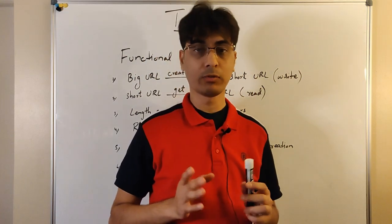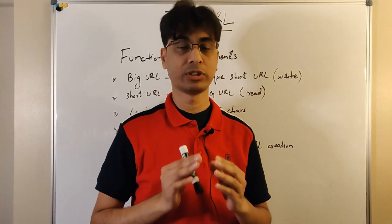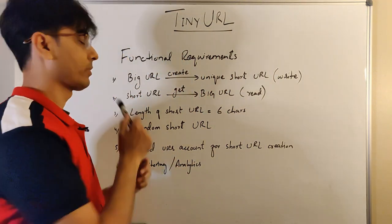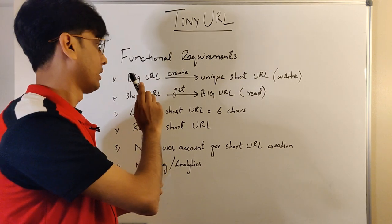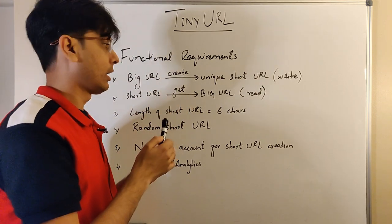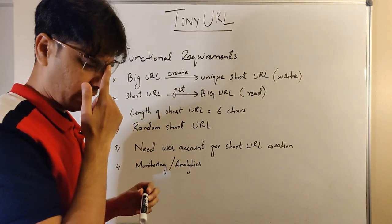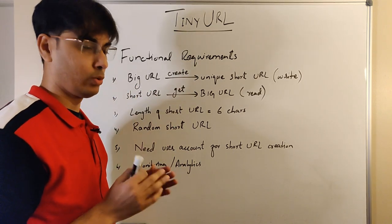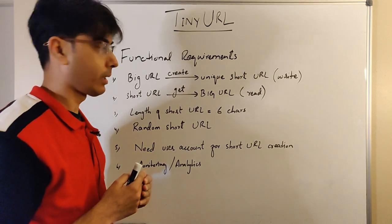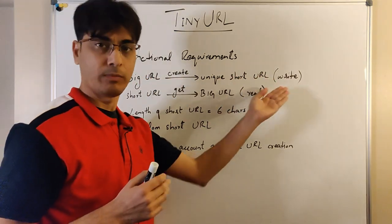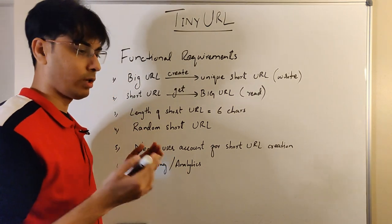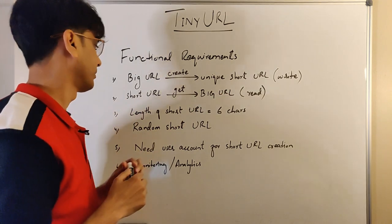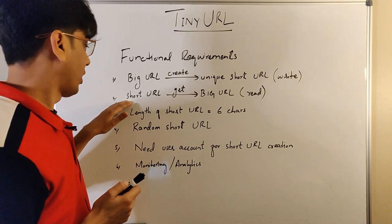We will first discuss the functional requirements — the requirements that deal with the functionality of the service. The very first functional requirement is that given a big URL, the service should be able to generate a unique short URL. Even if two users provide the same big URL, the service should return two different unique short URLs to them. This is a write operation because we are creating and storing a mapping between a big URL and a short URL.